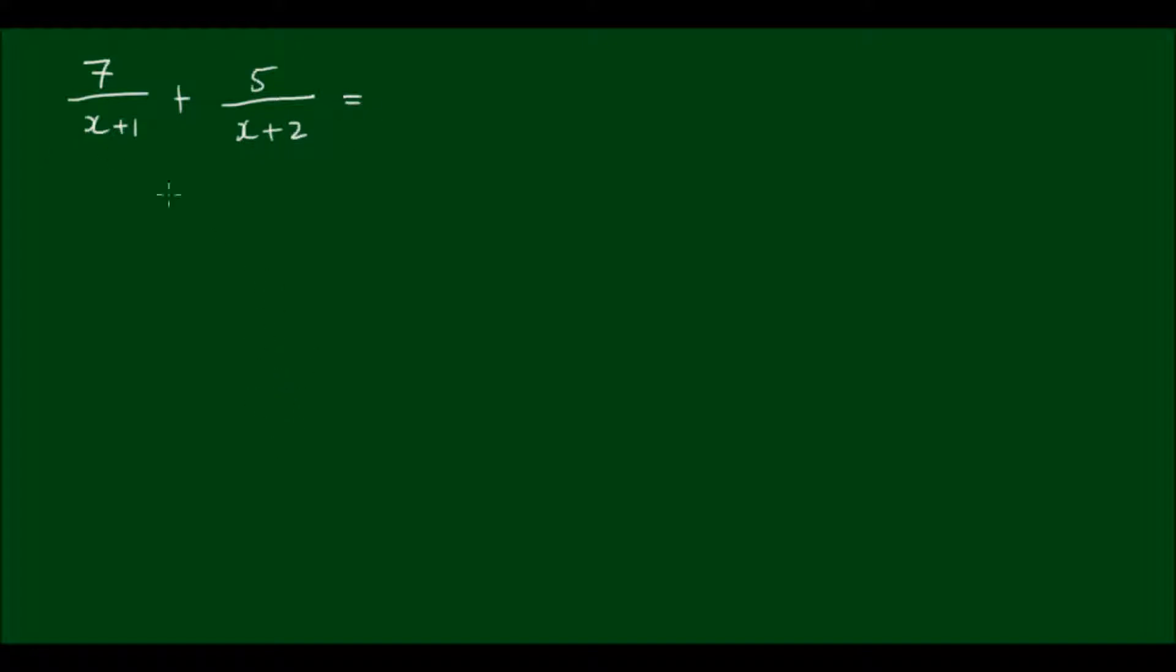I can simplify this expression by combining these fractions together. I can do that by multiplying the two denominators together and then cross-multiplying each denominator with the other numerator.